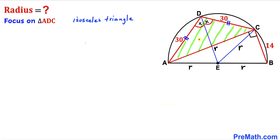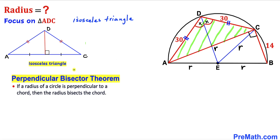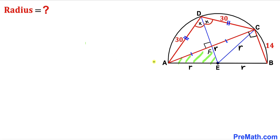Let's focus on triangle ADC, which is an isosceles triangle since AD equals CD. Recalling the perpendicular bisector theorem: if a radius of a circle is perpendicular to a chord, then the radius bisects the chord. Here AC is our chord and DE is the radius, so segment AF equals segment FC, and this angle is 90 degrees.